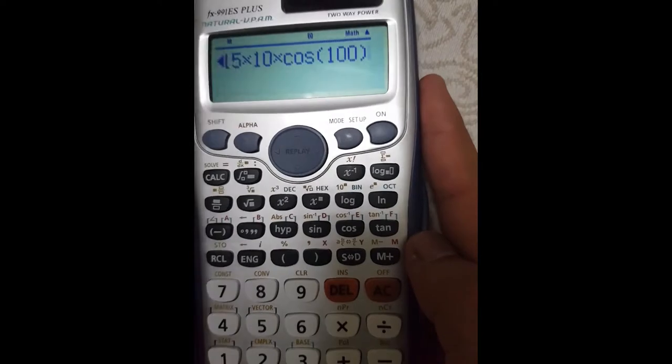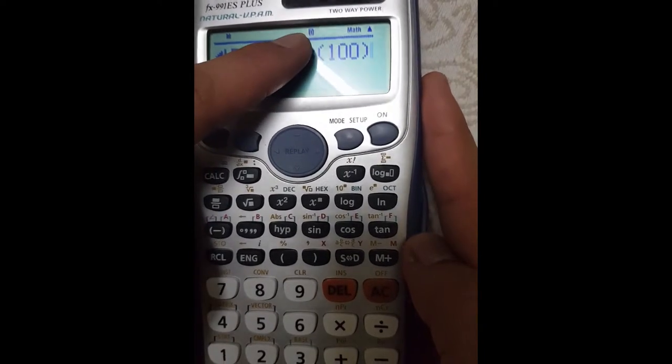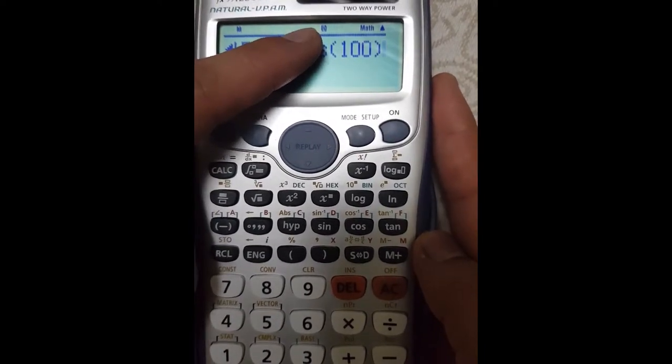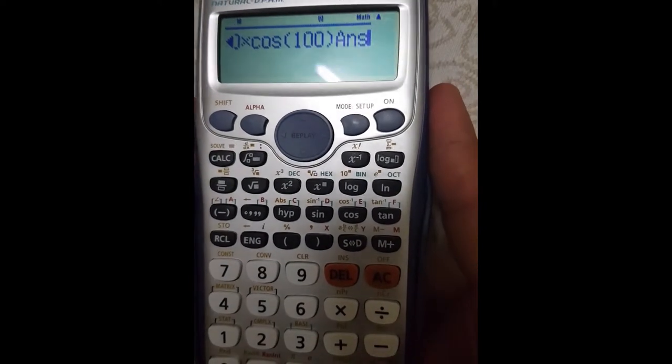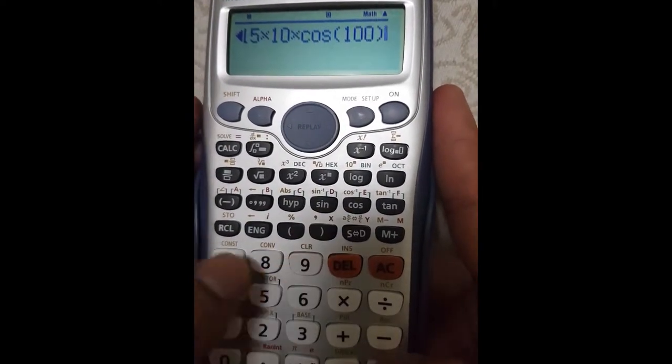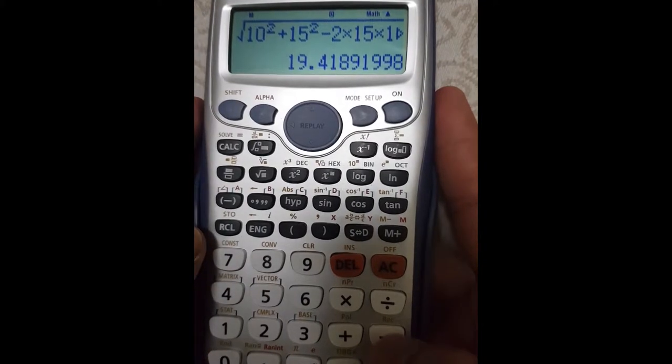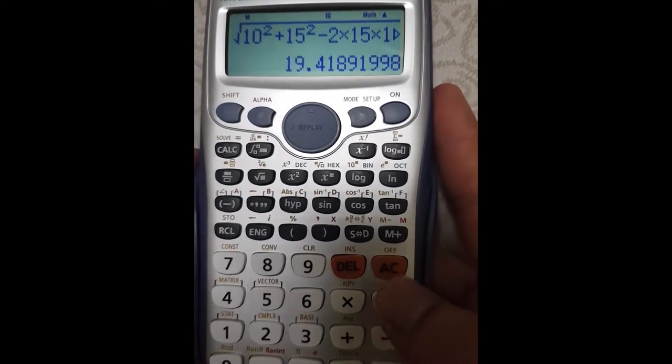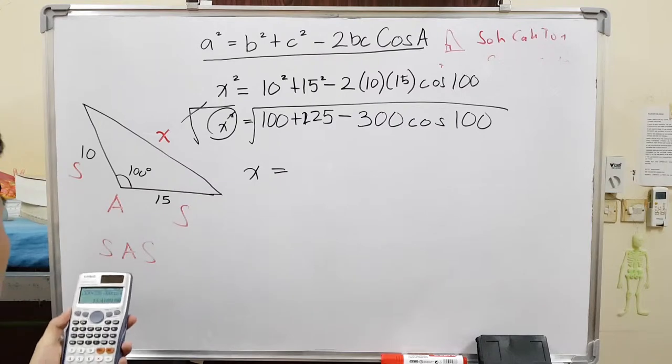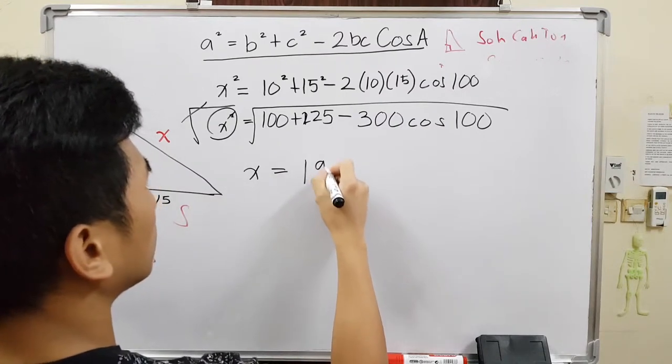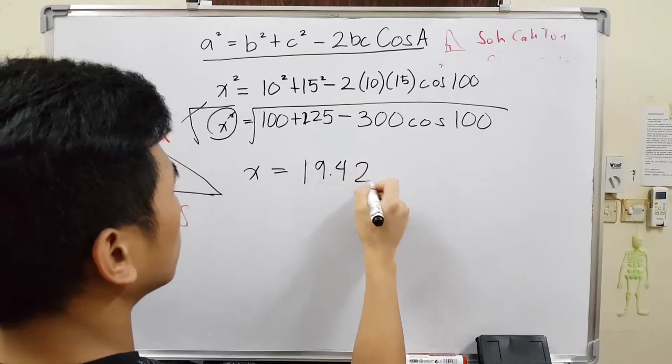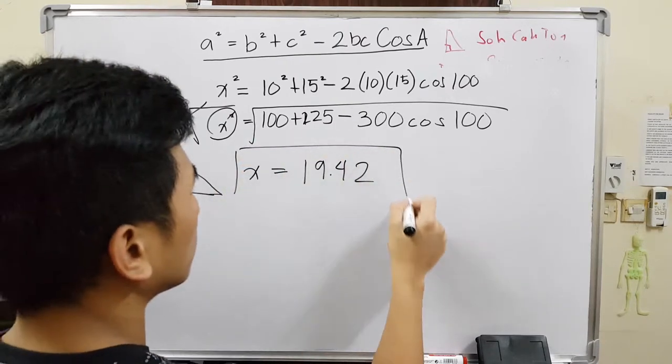And that's it. And make sure guys that this one over here is in D. It has to be in degrees. If it's in R, you will get a wrong answer. And our answer will be, sorry, this is our answer, 19.42. So our x in here is approximately 19.42. And that is how long the side is. Or side x.